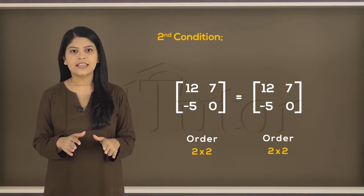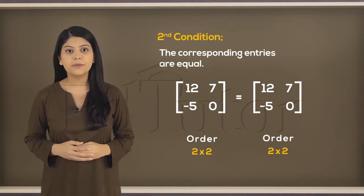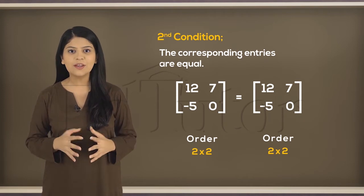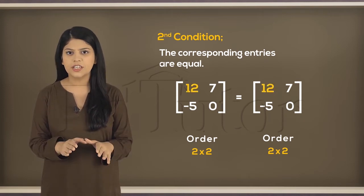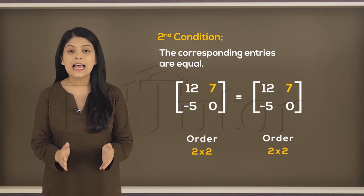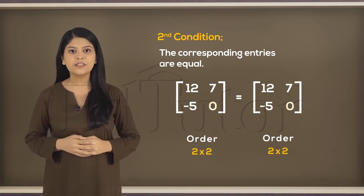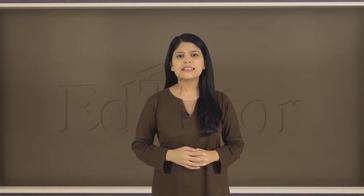The second condition says that the corresponding numbers of the matrices should be equal. By corresponding numbers, I mean the numbers at similar positions in each matrix. Let's discuss some examples to understand this further.